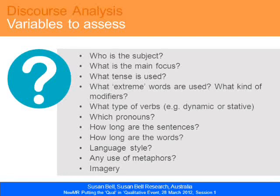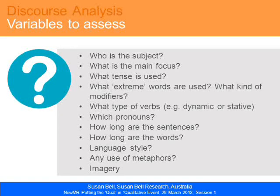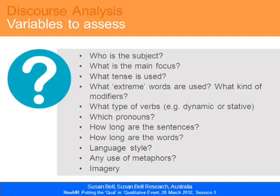These are the variables we assessed on the 10 websites: who was the subject of their text, what was the main focus, what tense they used, what extreme words, what kind of modifiers. Those are probably the key variables you'd use in absolutely any study like this. Similarly, we looked at the type of verbs — whether a dynamic verb, an action verb, or more of a static verb.